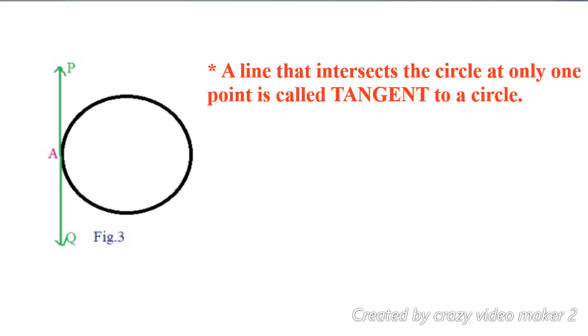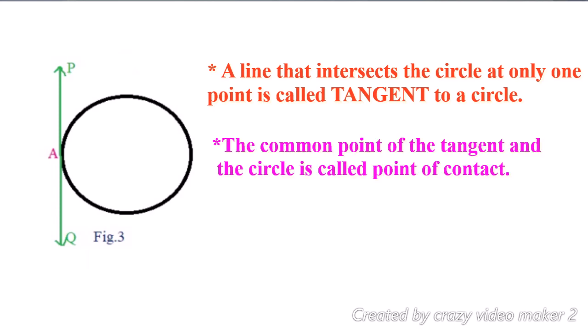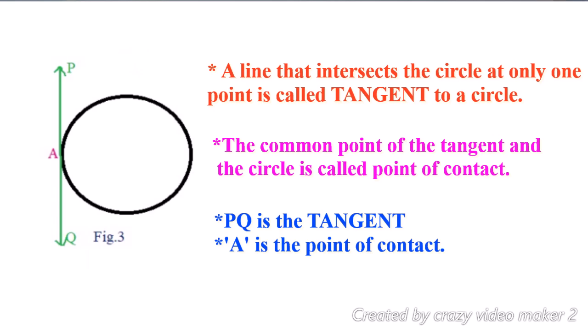PQ is the tangent. A is the common point between the circle and the tangent. The common point between the circle and the tangent is called the point of contact. A is the point of contact, and O is the center of the circle.